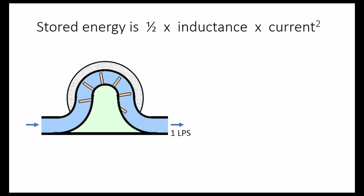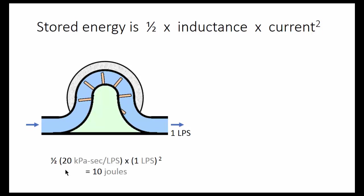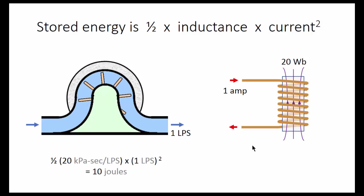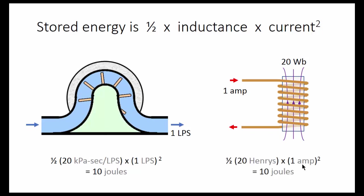You may recall from freshman physics that kinetic energy is proportional to velocity squared, and so it is with the inductor. The energy stored by this turning flywheel is one-half the inductance times the flow rate squared — in this case 10 joules. And for the electronic inductor, the energy stored in the magnetic flux is one-half times the inductance times the current squared, also 10 joules.